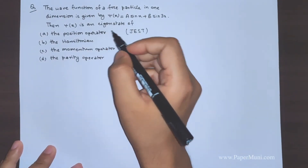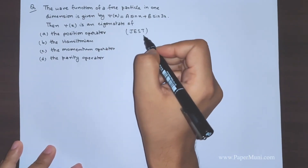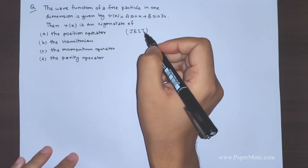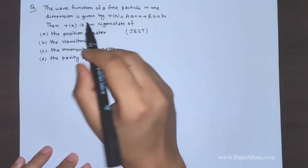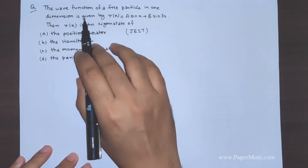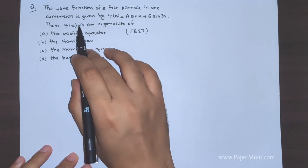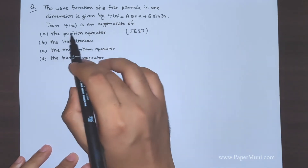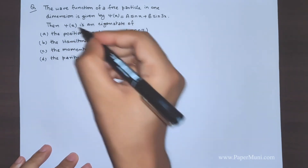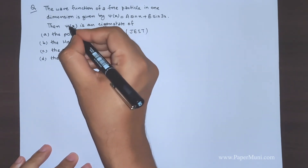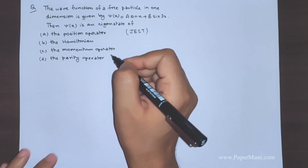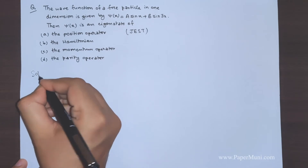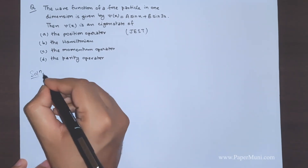Now for the second question — the wave function of a free particle in one dimension is given by ψ(x) = a·sin(x) + b·sin(3x). Then ψ(x) is an eigenstate of which of the following operators? We'll handle each option one by one.